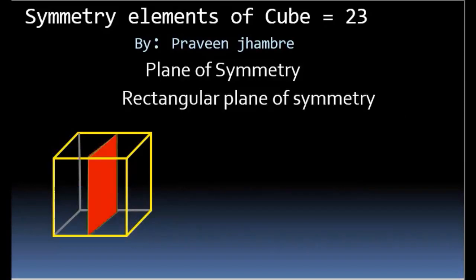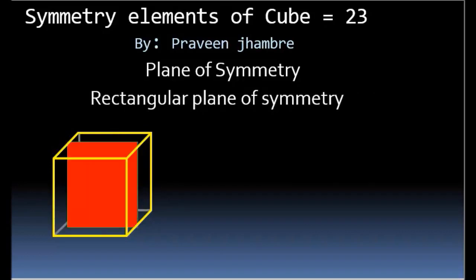What do we mean by plane of symmetry? Plane of symmetry means an imaginary plane which divides the cube such that one half is the mirror image of the remaining half. A rectangular plane of symmetry is a rectangular plane between two opposite faces, passing through the center, which divides the cube into two equal parts. Between two opposite faces there is one rectangular plane of symmetry.